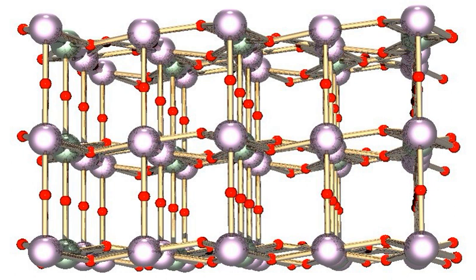The compound can be produced by any one of three primary chemical conversion processes, involving either uranium tetrafluoride or uranyl fluoride as intermediates.